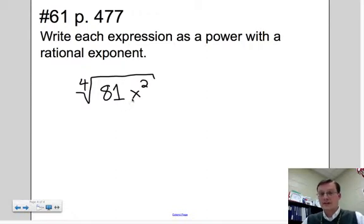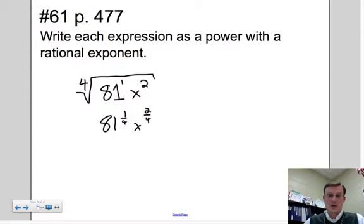In this one, we're going to have to do a little bit more work. 81 is to the first power, x is to the second power. Inside, outside. So 81 to the 1 fourth power, x to the 2 fourths power. Now the thing is, in this one, there's a little bit more work to be done. So what I'm going to do is take the 81 and break it into its prime numbers and see if there's anything that can be done with this.